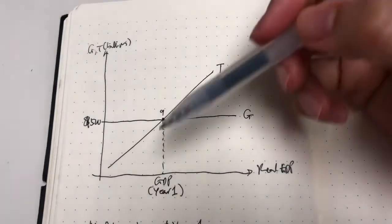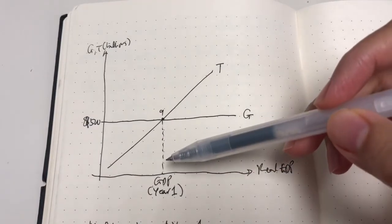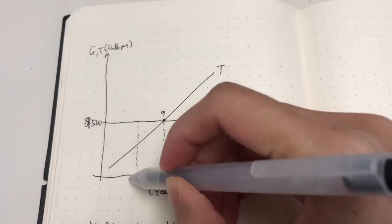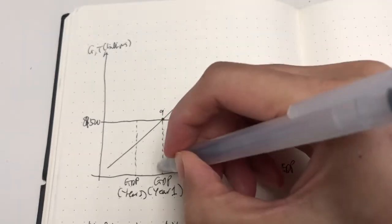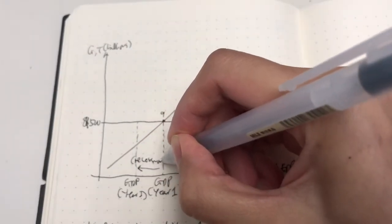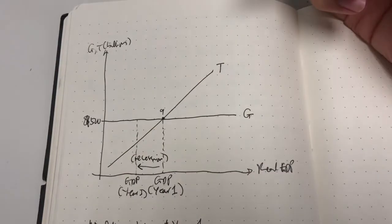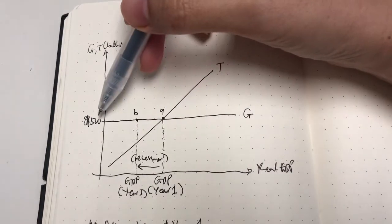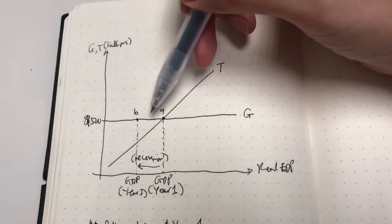Say a recession happens. When a recession happens, there's a fall in output, fall in income, and possibly a fall in employment. Let's draw a new GDP level here — this is GDP at year two when the recession happens. At this recession point, G is no longer equal to T. The amount of G, labeled as point B, is still fixed at $500 billion because G is a straight line — regardless of the GDP level, government spending remains the same.